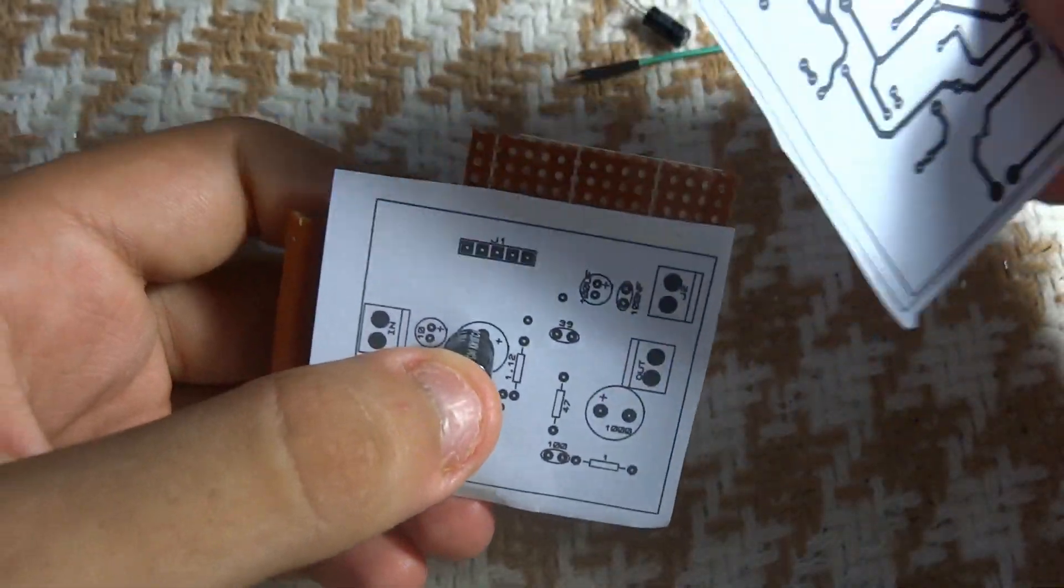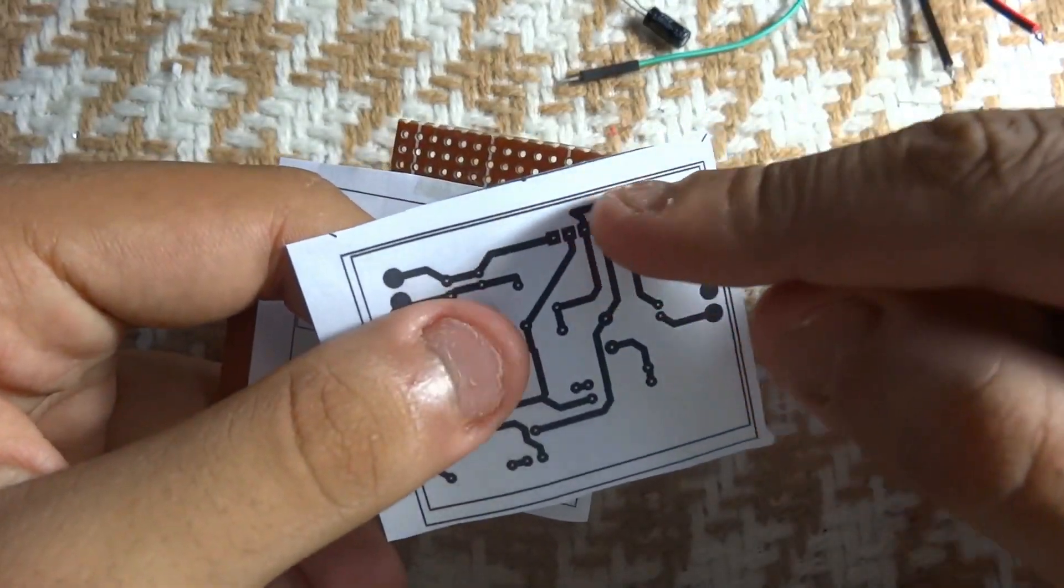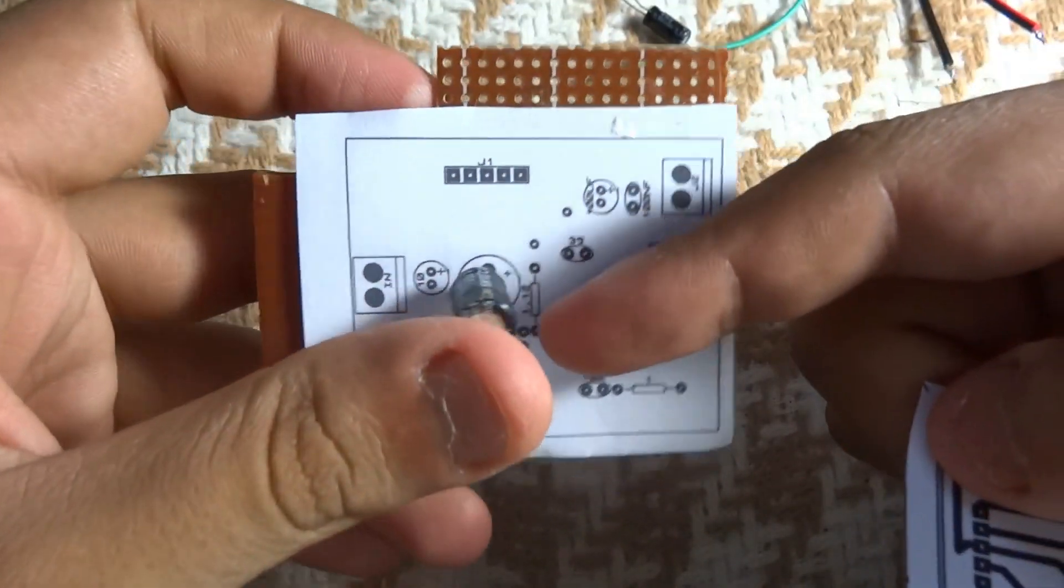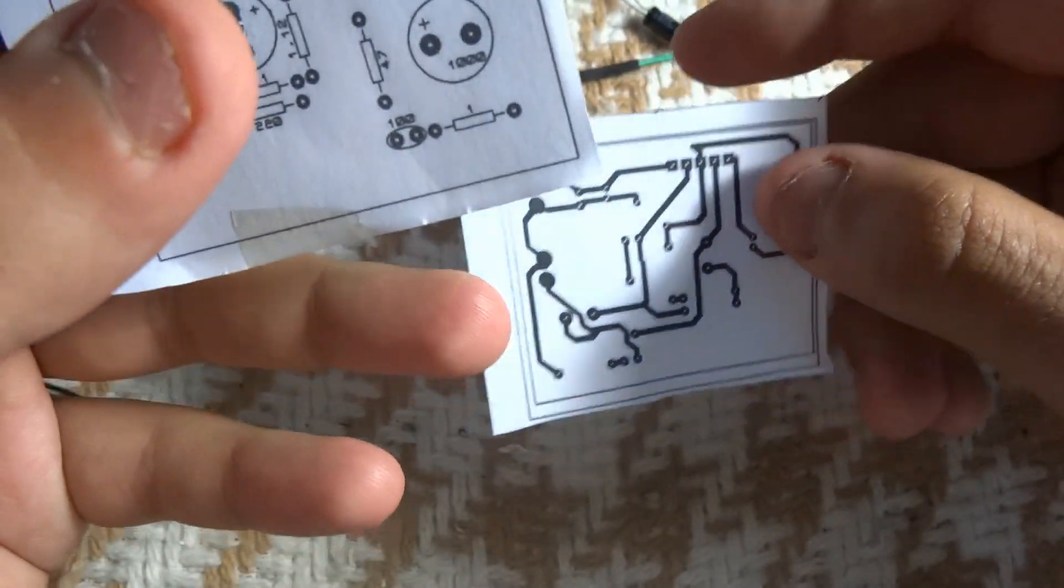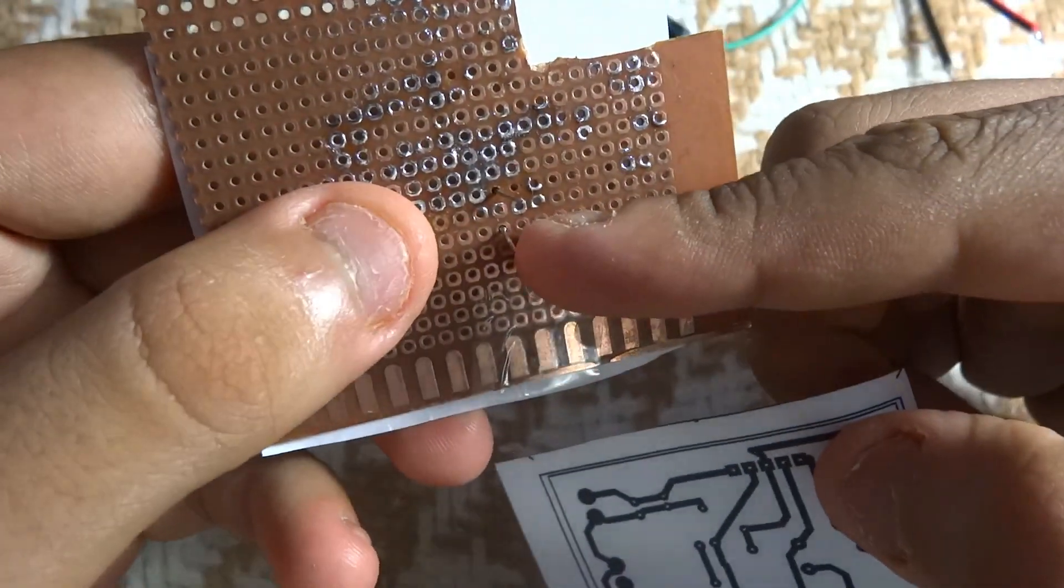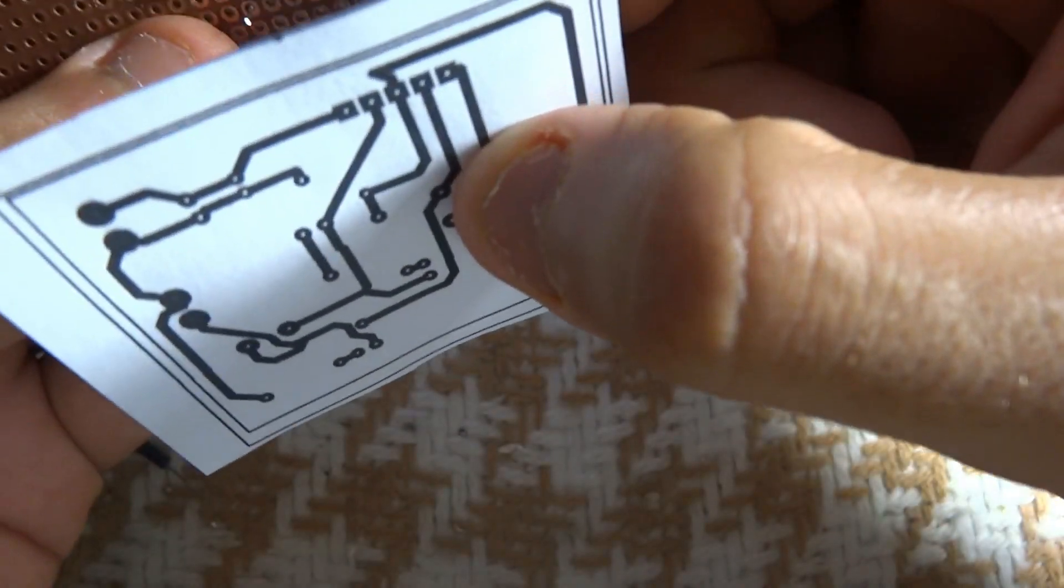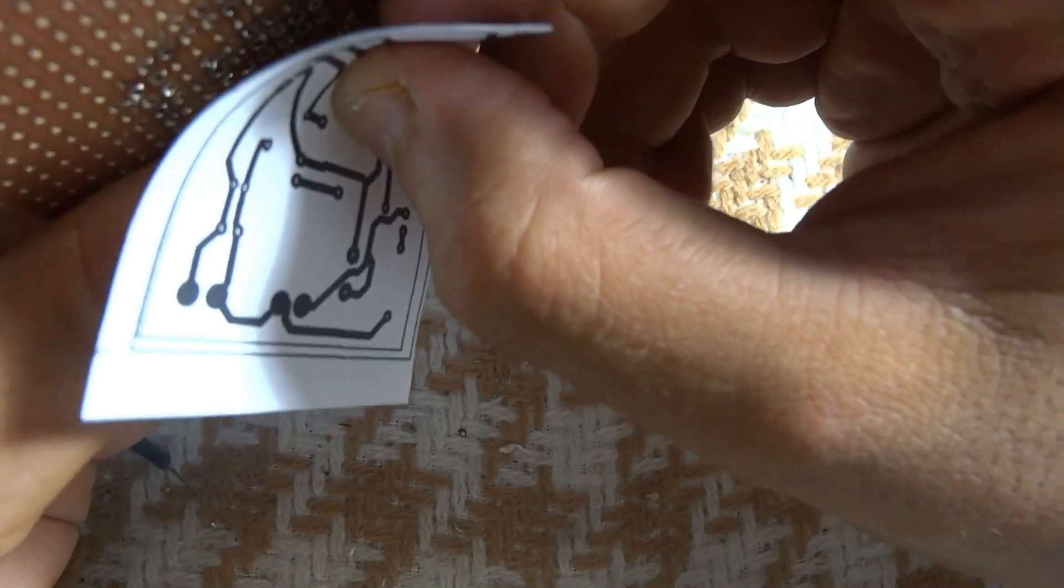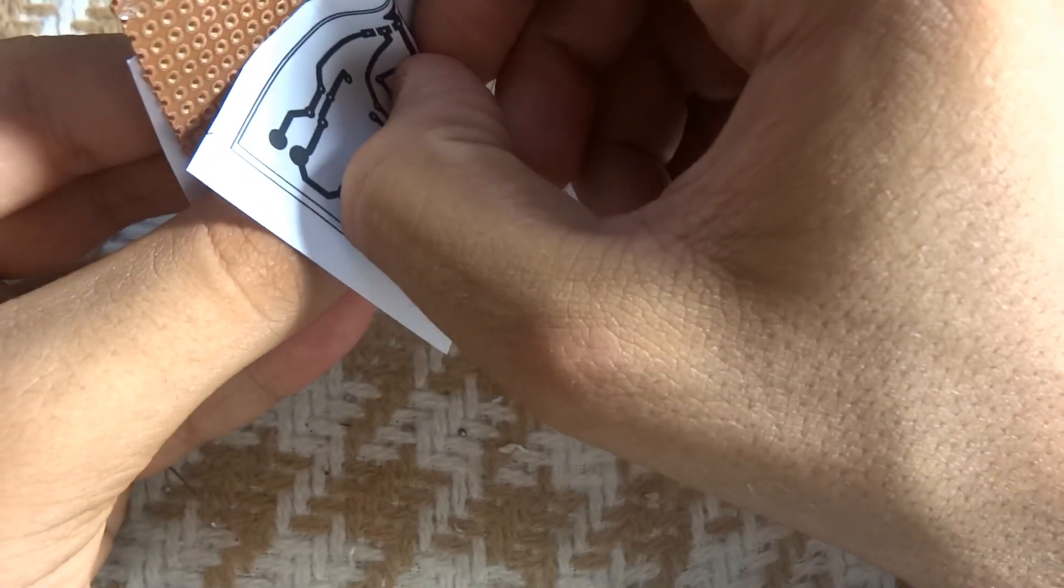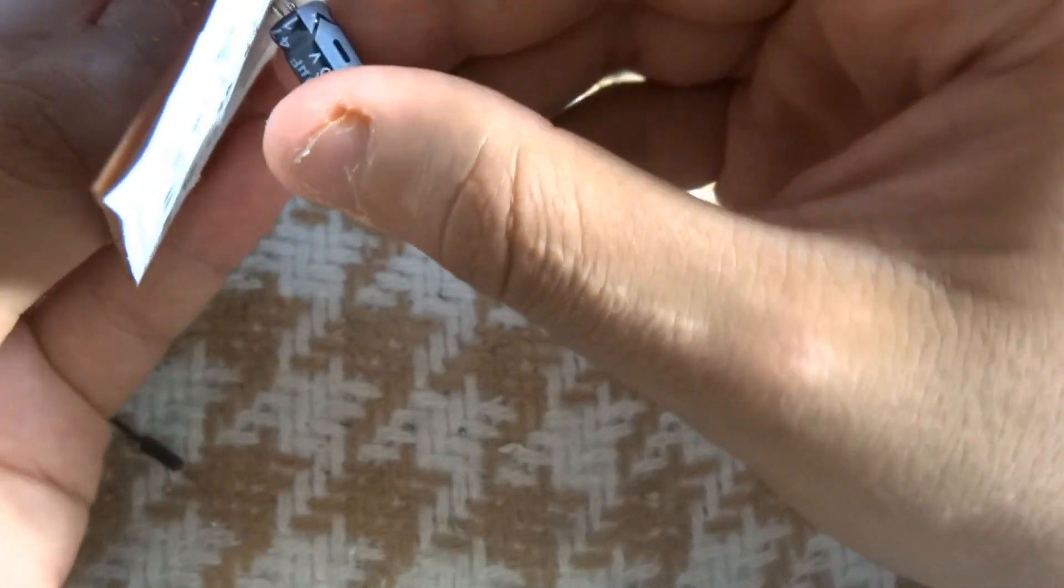Now take your component and press it here. Now after you press your first component, take this layer and just put it here in a way that these four holes here face the four holes here, and this component faces its place. So this component here, its place are those two here, so just make sure that they're facing each other.